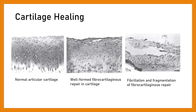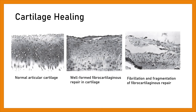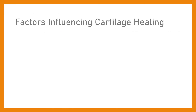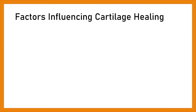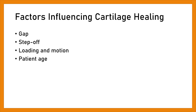This figure shows that cells lose the appearance of chondrocytes and appear to become more fibroblastic, with the fibrous matrix showing fibroblasts and ligaments. Factors influencing cartilage healing consist of: gap, step-off, loading and motion, and patient age.